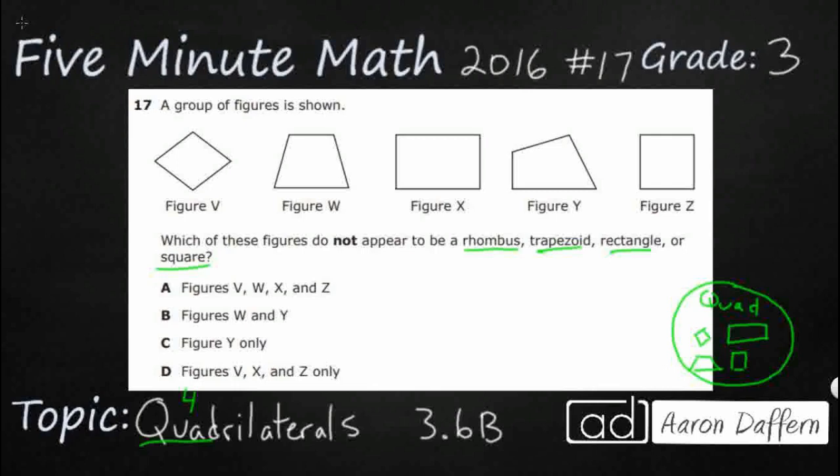But what do we know? A parallelogram is not one of the listed items, but that's also a four-sided shape. So which of these figures do not—that's going to be big for us—appear to be a rhombus, trapezoid, rectangle, or square? Well let's start with what we know.